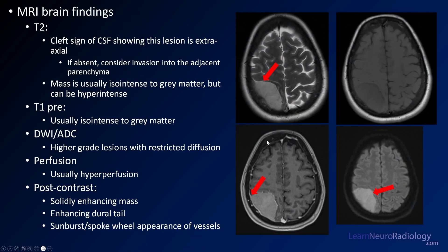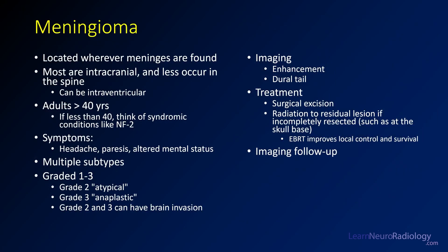On MRI, we have the T2 cleft sign, avid enhancement, and dural tails. On diffusion, we have diffusion hyperintensity — with tumors, this usually comes from tightly packed cells where water doesn't move freely. This etiology typically has hyperperfusion, can be FDG-avid, is usually solidly enhancing, and the spoke-wheel pattern seen faintly on T2 is also characteristic.